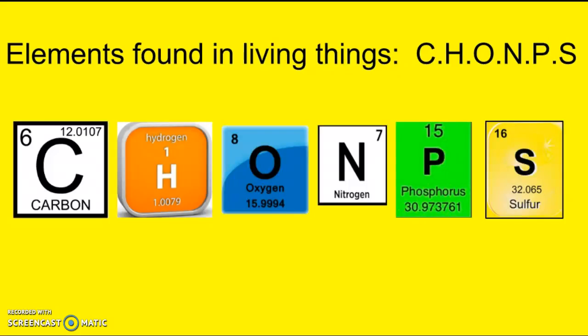Elements that are found in all living things are carbon, hydrogen, oxygen, nitrogen, phosphorus, and sulfur. It's oftentimes abbreviated as CHNOPS, which makes it an easy way to remember.